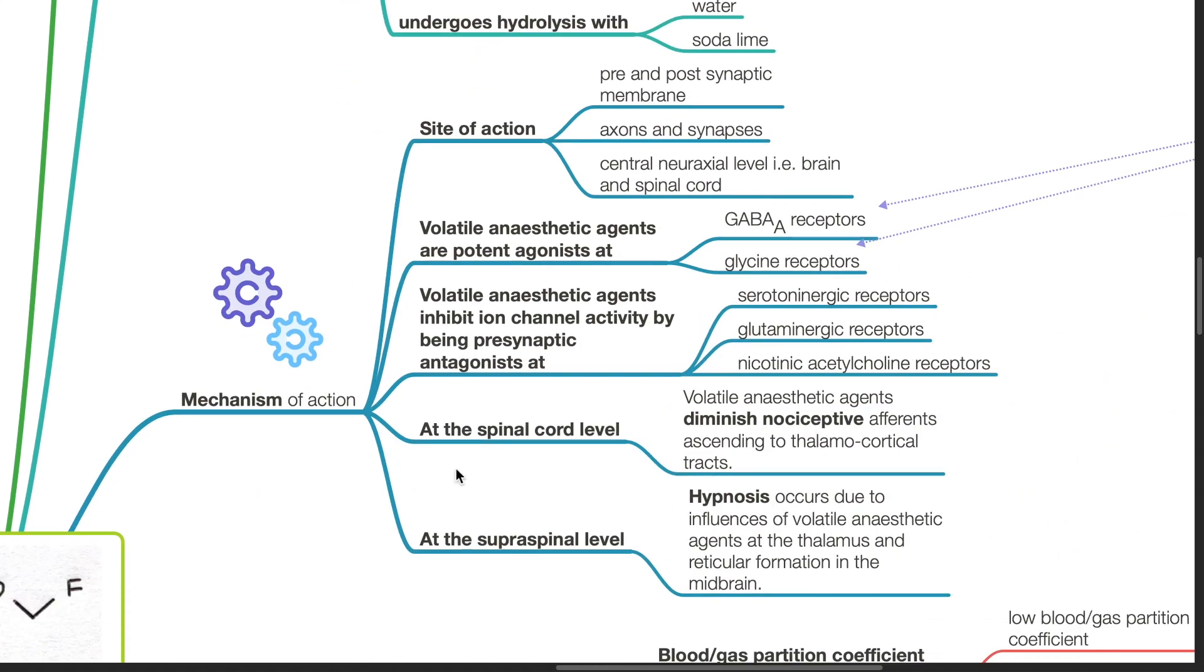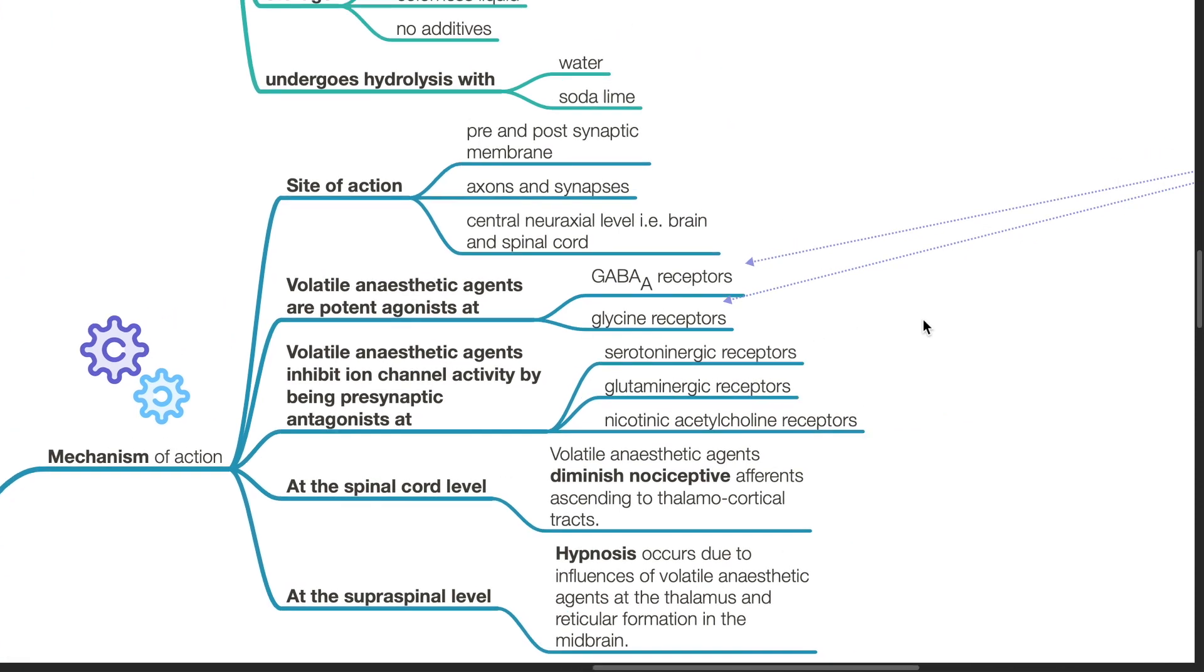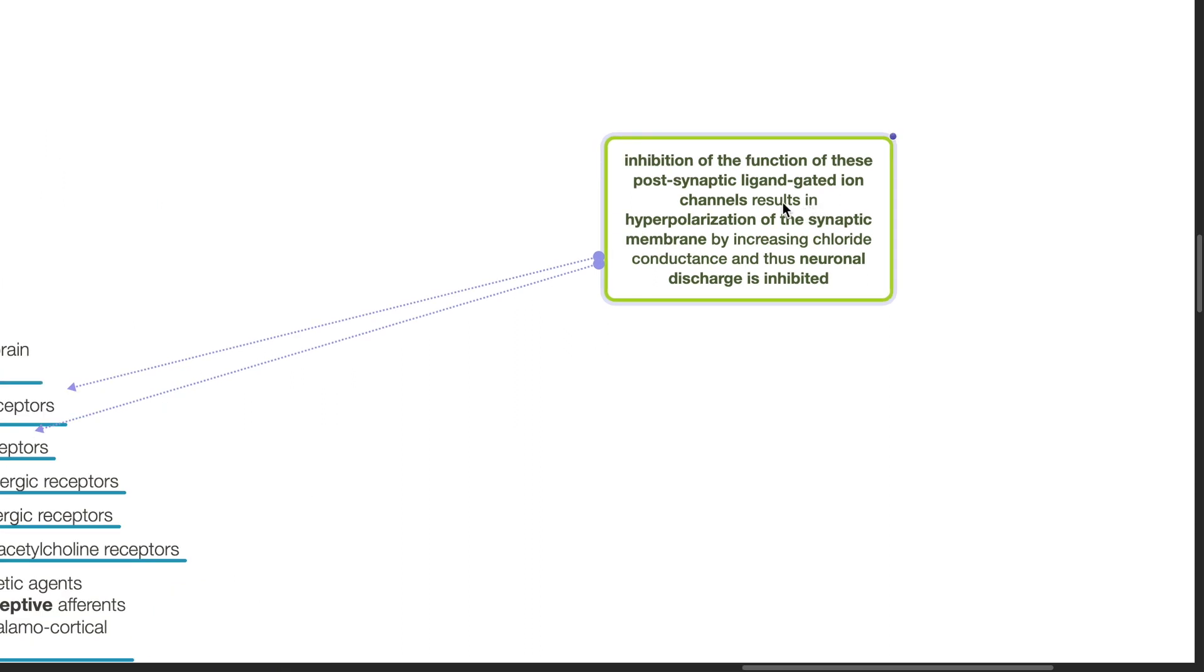Mechanism of action. The site of action is at the pre- and post-synaptic membrane, at axons and synapses, at the central neuraxial level. The volatile anesthetic agents are potent agonists at the GABA-A receptors and glycine receptors. Inhibition of the function of these post-synaptic ligand-gated ion channels results in hyperpolarization of the synaptic membrane by increasing chloride conductance, and thus neuronal discharge is inhibited.